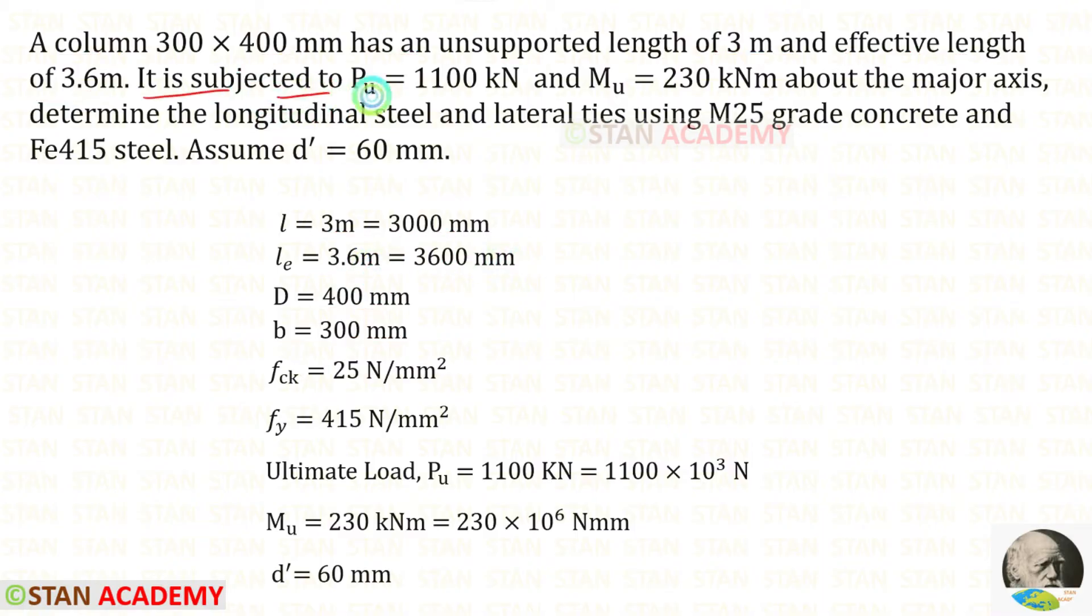It is subjected to Pu equals 1100 kilonewton. The factored load is 1100 kilonewton, we can convert that into Newton. Factored moment Mu is given in kilonewton meter, we can convert that into Newton millimeter. Both of them act about the major axis.